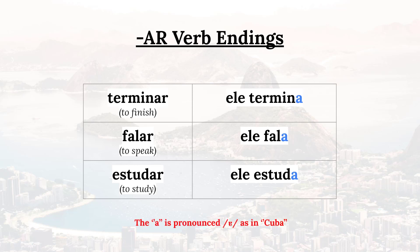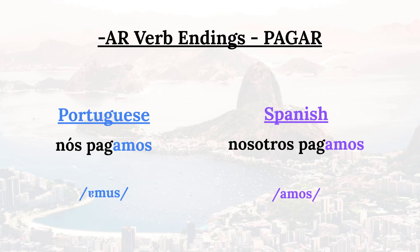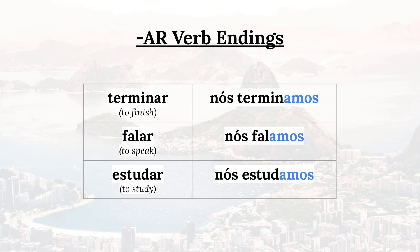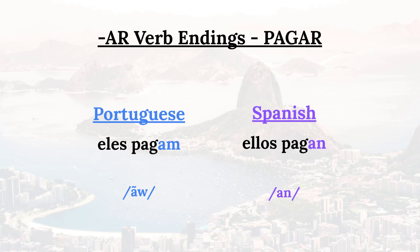'We pay' is 'nós pagamos.' Once again the A is pronounced 'ah' as in 'Cuba,' and the O is pronounced like a 'u,' so it's 'pagamos.' Compare that to 'pagamos' in Spanish. 'We finish' would be 'nós terminamos,' 'we speak' is 'nós falamos,' 'we study' is 'nós estudamos.'